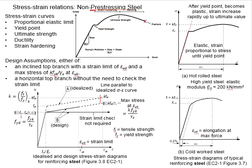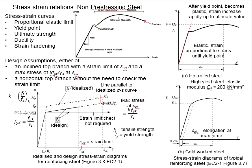The load-resistant property at the plastic stage is not as good as at the elastic stage, and the response can vary significantly between different samples. In other words, the response of the steel after the U-point is hardly predictable. With that, normally we do not like to design a structure to this stage.